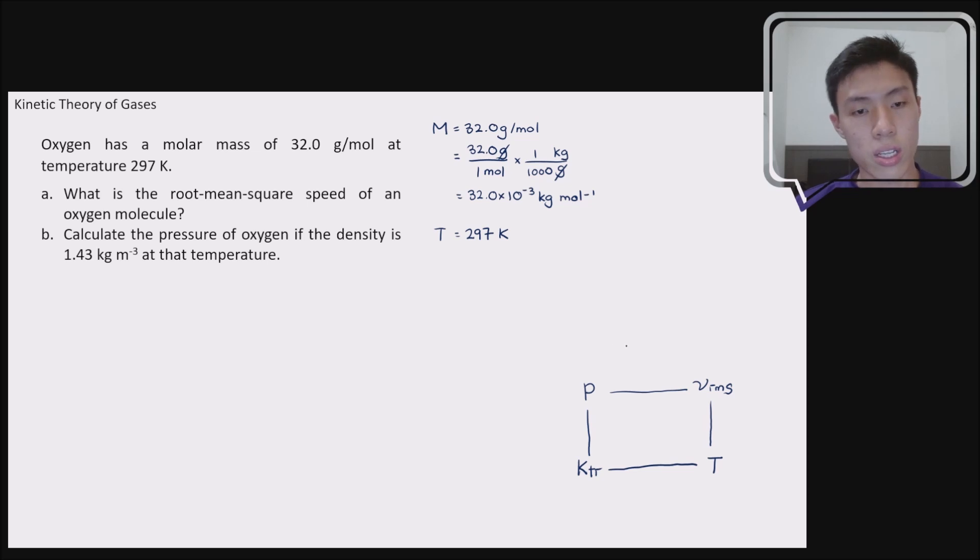So right now, you can see that for this situation here, they give you the temperature. So this is at the right bottom corner of our mind map over here, temperature. Then we are going to relate it to root mean square speed of the oxygen molecule. Root mean square speed, so this is VRMS.